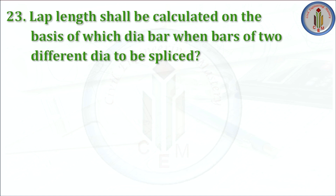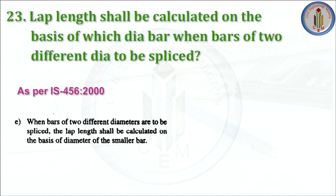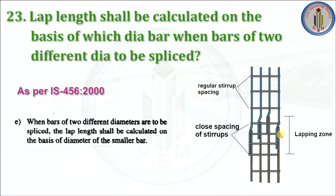Lap length shall be calculated on the basis of which diameter bar when bars of two different diameters are to be spliced? As per IS 456-2000, when bars of two different diameters are to be spliced, the lap length shall be calculated on the basis of the diameter of the smaller bar. For example, if a 12 mm bar and a 13 mm bar are to be spliced, while calculating the lapping length, we need to use the smaller diameter — so we use the 12 mm diameter bar.